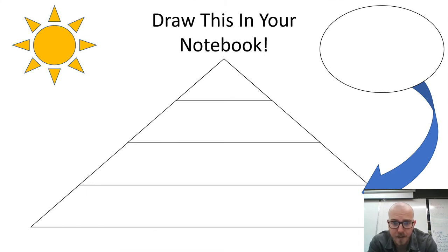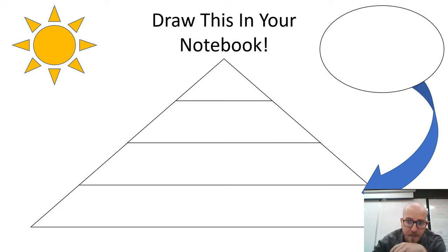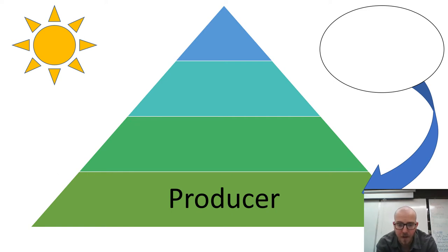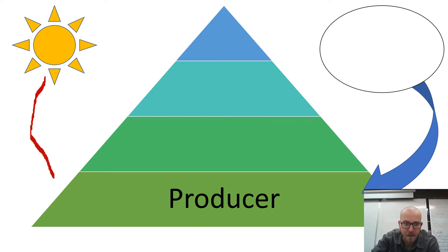The first thing you're going to want to do is draw this in your notebook, so I recommend pausing the video and drawing it all out. Make sure you include the sun and the circle on the top right there. The first level of our energy pyramid are the producers, and our producers are going to be plants, and they're getting all of their energy from the sun.